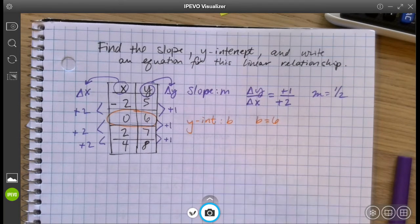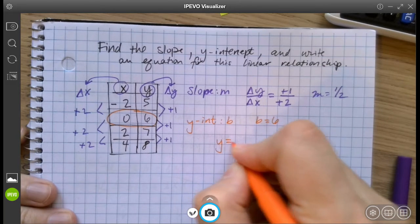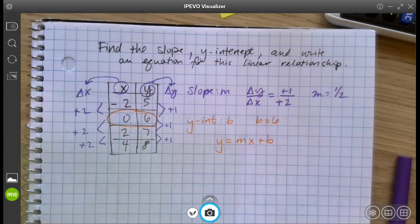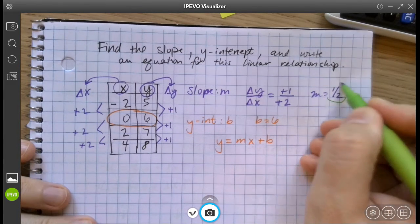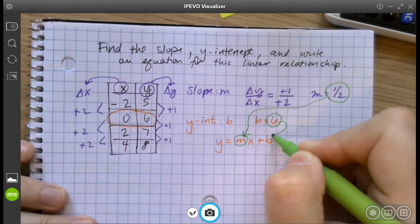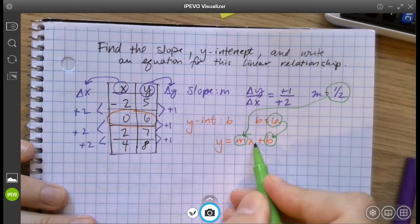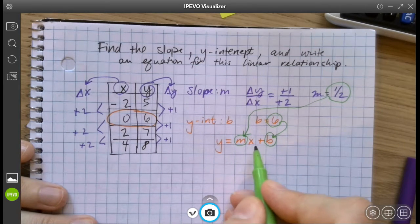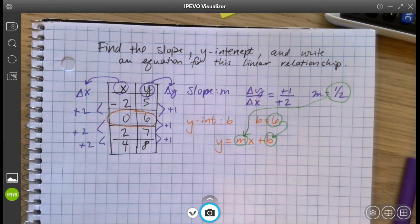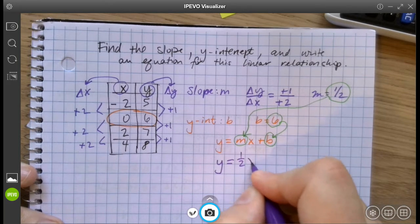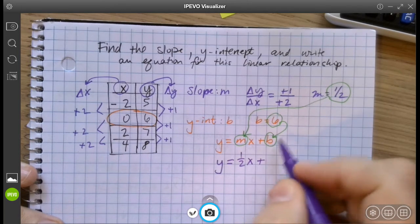And remember, an equation is y equals mx plus b. So I'm going to take my m value. That goes in for the m. And my b value goes in for the b. y and x need to stay in my equation because x is the input, y is the output variable, so those have to stick around. So then my equation is going to be y equals m is 1 half, x plus b is 6.